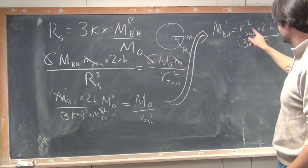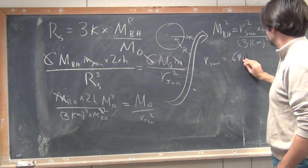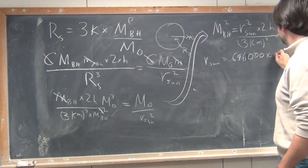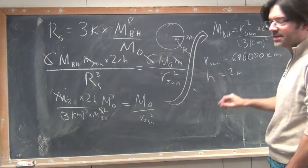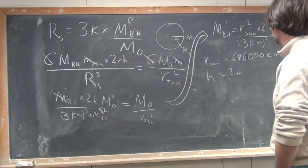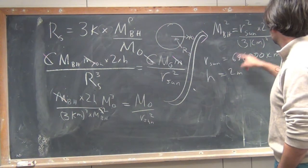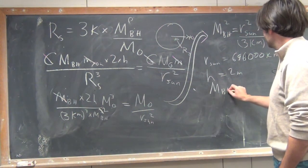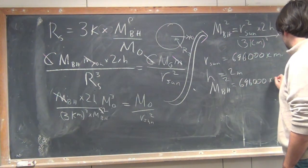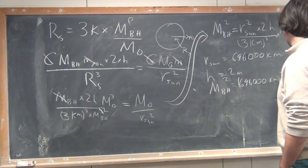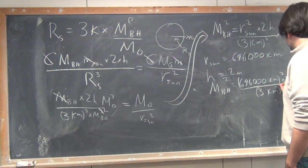So, I can now plug in the radius of the Sun is about 696,000 kilometers. I'm going to assume that my height is around 2 meters. I'm not actually 2 meters tall, but it's close enough that it's good enough. I'm closer to 2 than to 1. So, if I plug this in, what do I get? Mass of the black hole squared is 696,000 kilometers squared times 2 times 2 meters over 3 kilometers cubed.